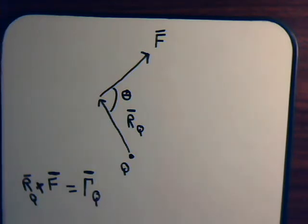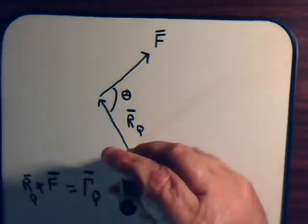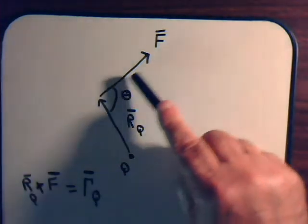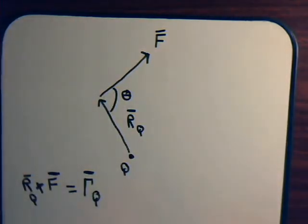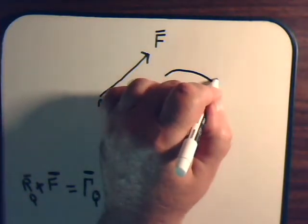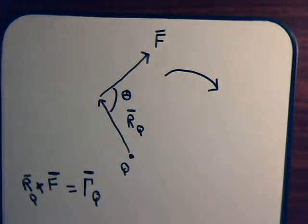Where the torque comes in is when you have a fixed axis and when you apply a force then you get a rotational movement. So if our point Q was where we had a fixed axis, and then we applied a force like this, I think we can see then that we would get a turning in this direction.